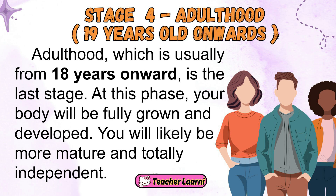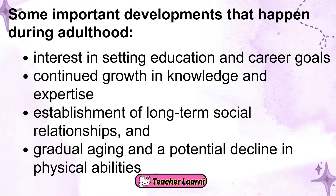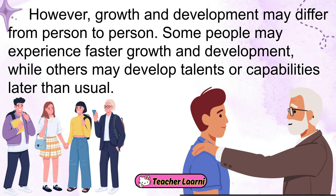Stage 4: Adulthood, 19 years old onwards. Adulthood, usually from 18 years onward, is the last stage. At this phase, your body will be fully grown and developed, and you will likely be more mature and totally independent. Growth and development may differ from person to person — some may experience faster growth, while others may develop talents or capabilities later than usual.